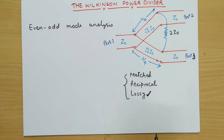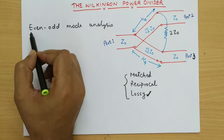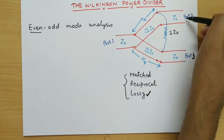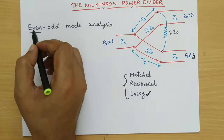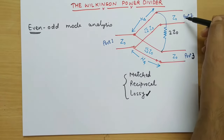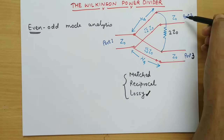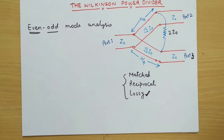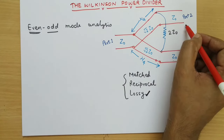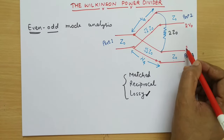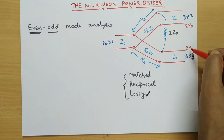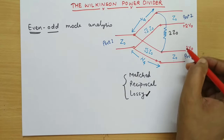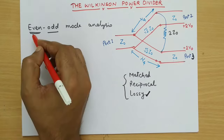What is even-odd mode analysis? We give two different voltages at port 2 and port 3. When we give the same voltage with the same magnitude and phase, that particular case is called even mode. If I am giving input voltage at port 2 as 2V0 and at port 3 as 2V0 — that means both voltages are the same with positive sign — this mode is called even mode.